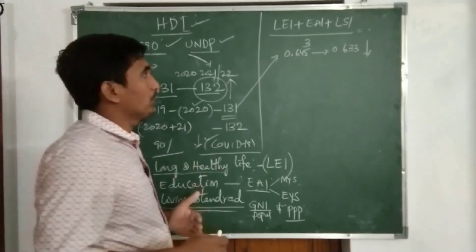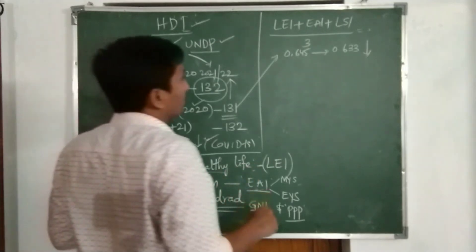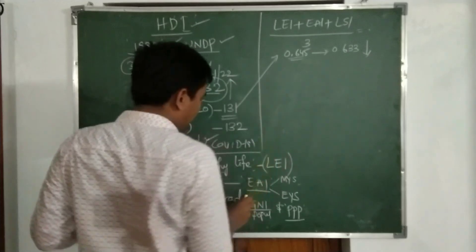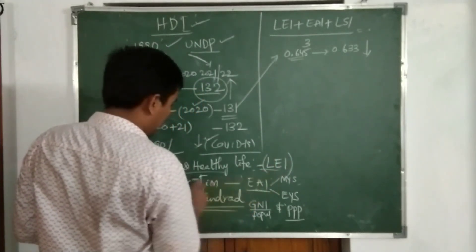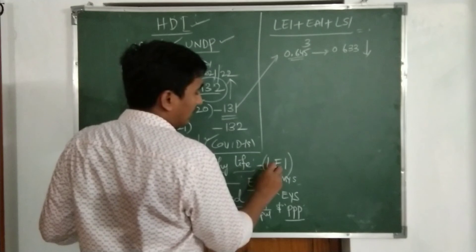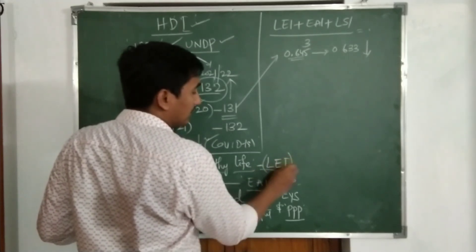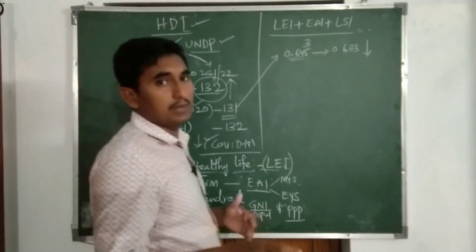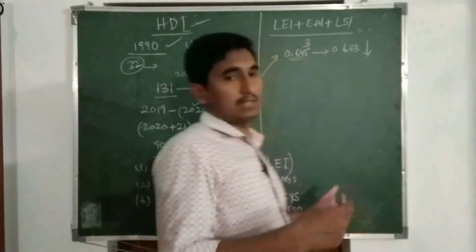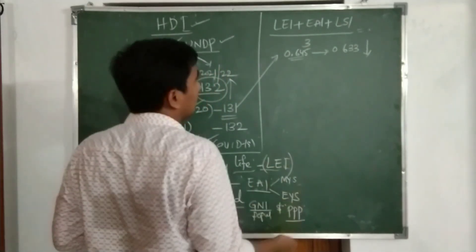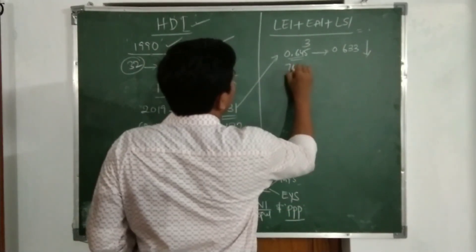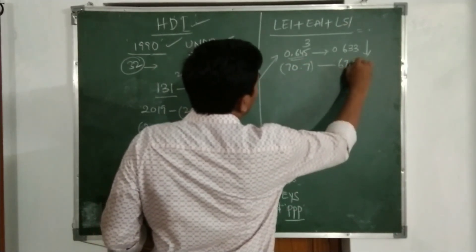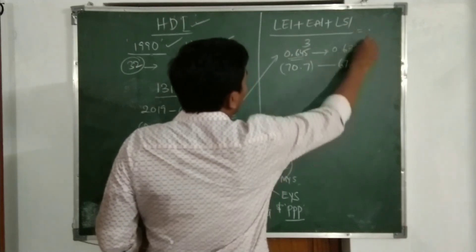The human development report has fallen in many countries including India. Especially when you look at COVID-19's impact on long and healthy life, it is very difficult. In India, the life expectancy at birth is 67.2 years, and the score reflects that difficulty.